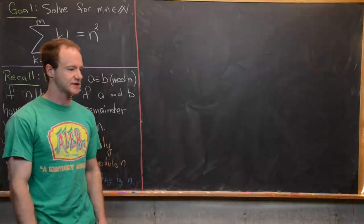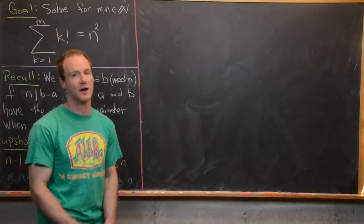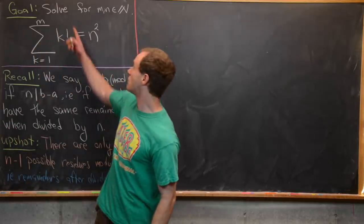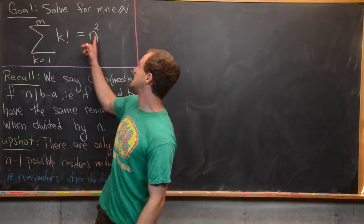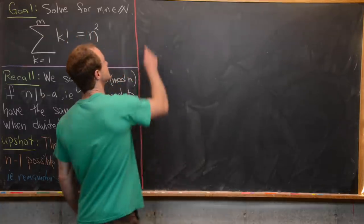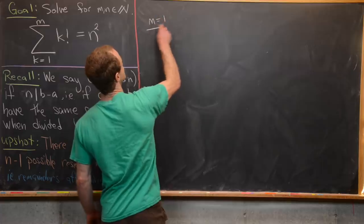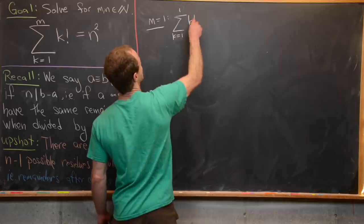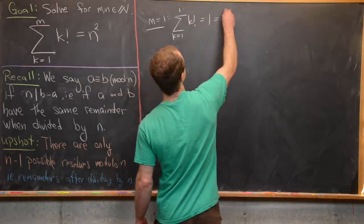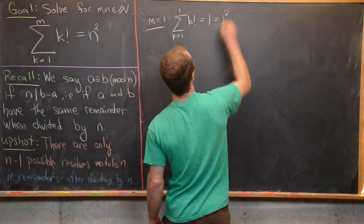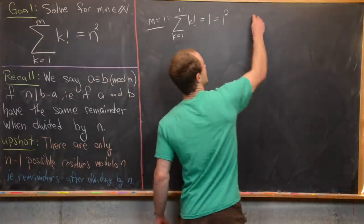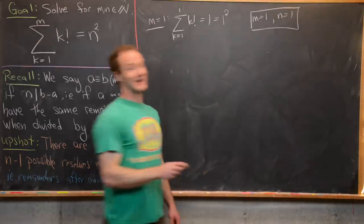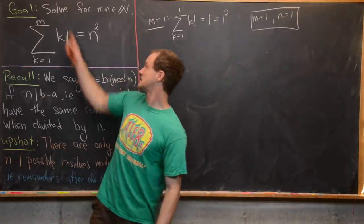Now we're ready to construct our solution, taking motivation from those examples about perfect squares modulo primes. Let's test small values of m. For m equals 1, the sum from k=1 to 1 of k factorial is obviously equal to 1, which equals 1 squared. So m=1, n=1 is definitely a solution.